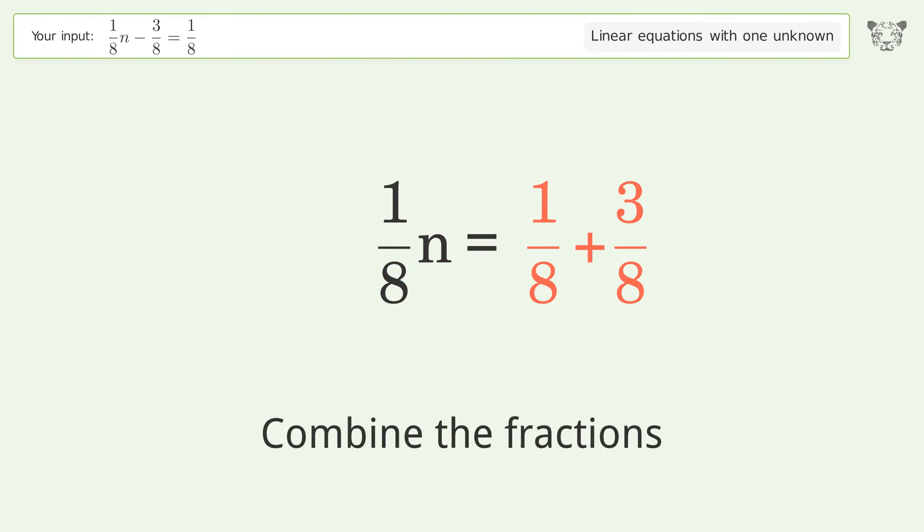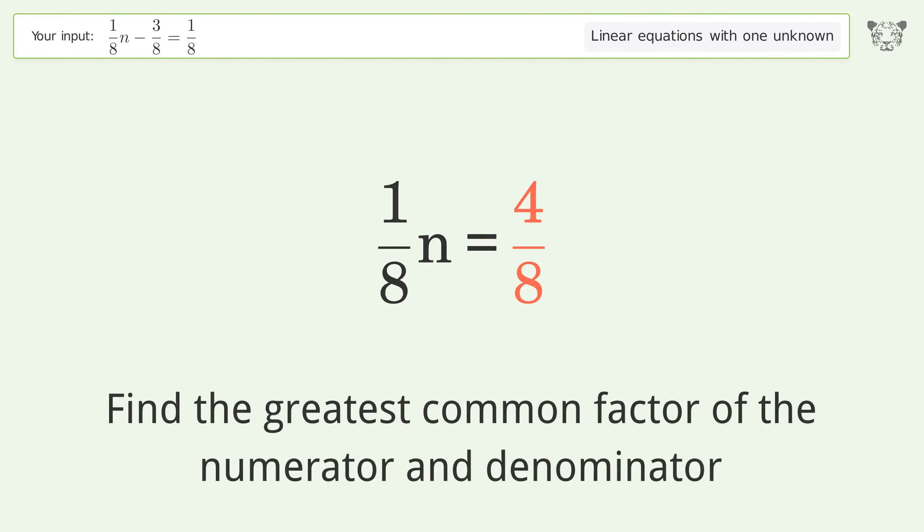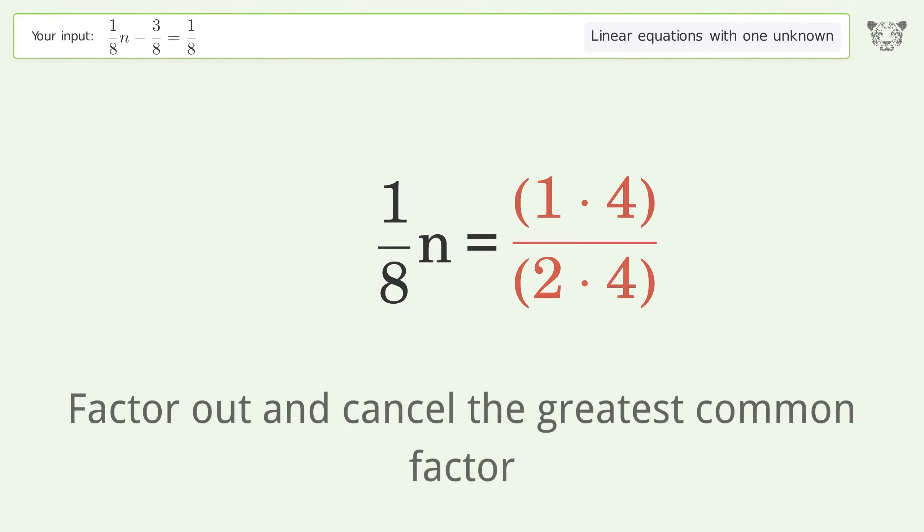Combine the fractions. Combine the numerators. Find the greatest common factor of the numerator and denominator. Factor out and cancel the greatest common factor.